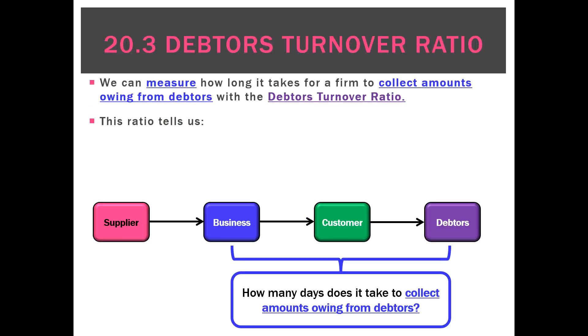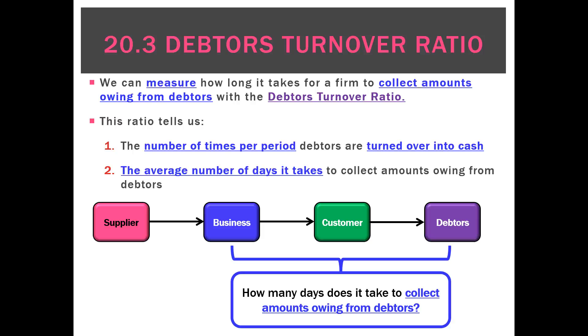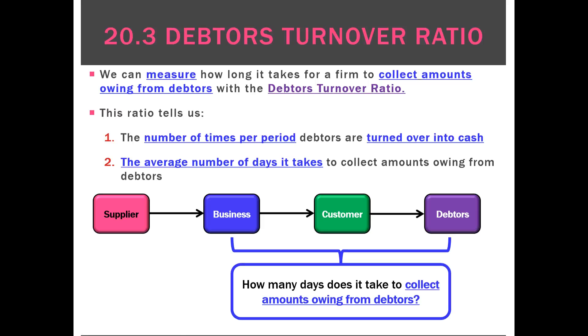There are two ways we can express the debtors turnover ratio. One is the number of times per period that debtors are turned over into cash. And secondly, the average number of days it takes to collect the amounts owing from our debtors.